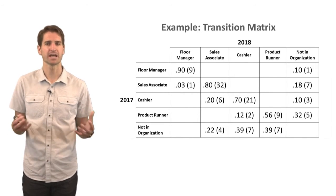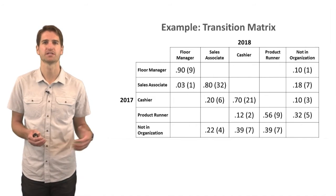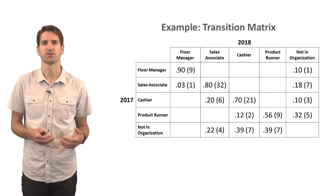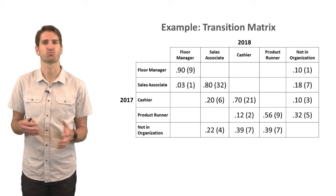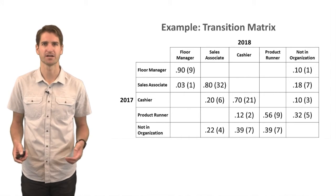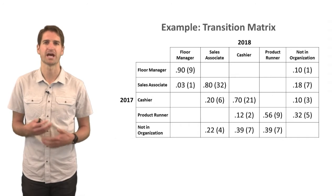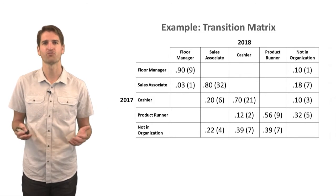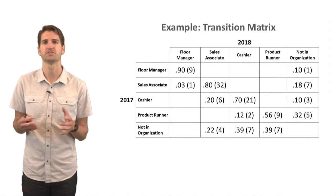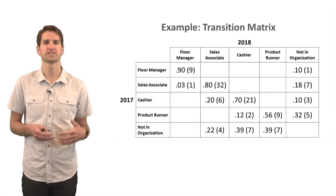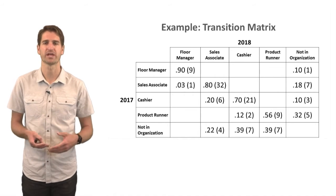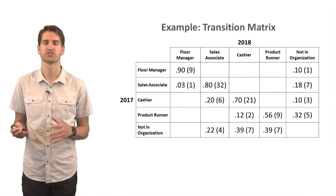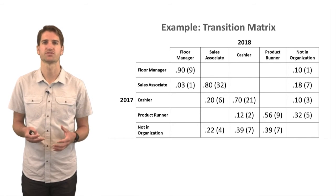One way to understand how people are moving within, into, and out of our organization is using what's called a transition matrix, sometimes called a Markov chain matrix. It shows the proportion or raw number of employees in different job categories at different times. Let's look at an example — this is a useful form of descriptive analytics to describe how people have moved through the company and help project how people might move in the future if these patterns hold.